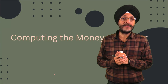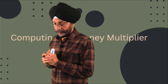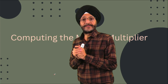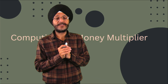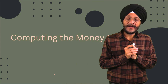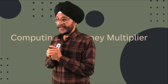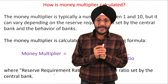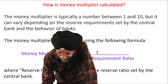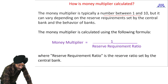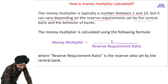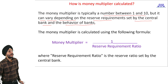Now the topic before us is computing the money multiplier. We have already learnt that money multiplier represents the factor by which the initial deposit can be multiplied to arrive at the money supply in the economy. The money multiplier is typically a number between 1 and 10, but it can vary depending on the reserve requirements set by the central bank and the behaviour of banks.